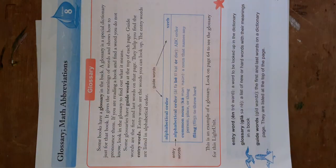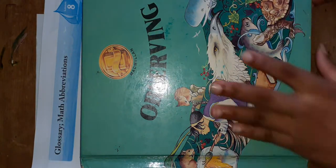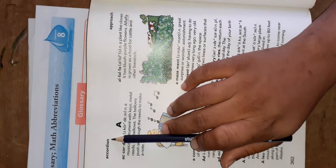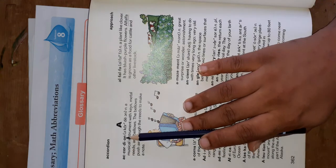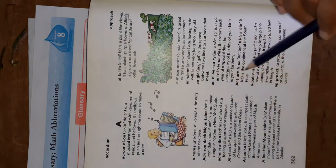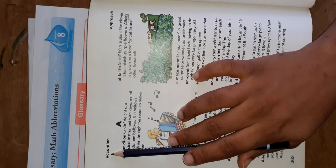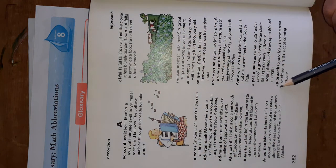Let's look at another example. You can go around in your house and look for books that have glossaries. The glossary begins here. What are the guide words on this page? It's accordion and approach. The first entry word is accordion — notice how all the entry words on this page begin with the same letter. Approach is the last entry word.